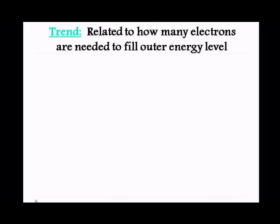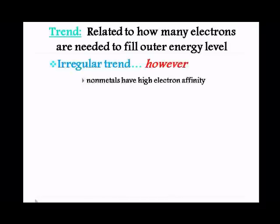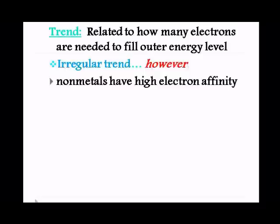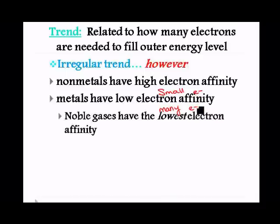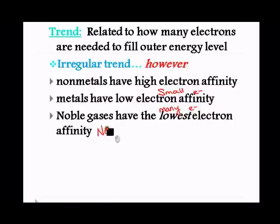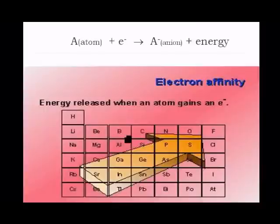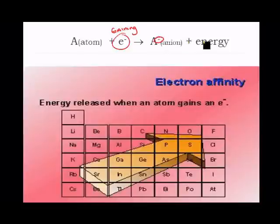Generally, the trend in electron affinity is related to how many electrons are needed to fill an energy level. Non-metals have a high electron affinity because they need a small number of electrons to fill their octet. Metals have a low electron affinity because they need many electrons. Noble gases have the lowest electron affinity because they need no electrons. So here's what we see: an atom gaining an electron produces a negatively charged anion and energy.